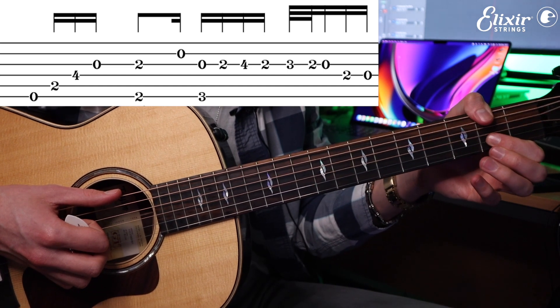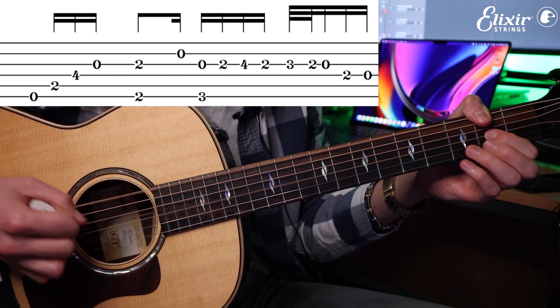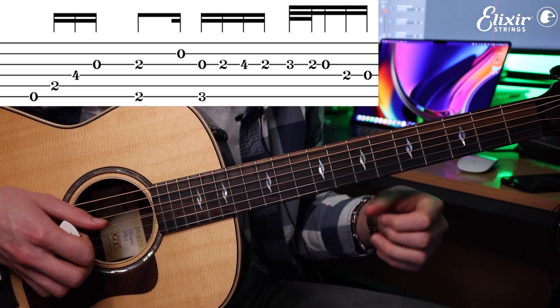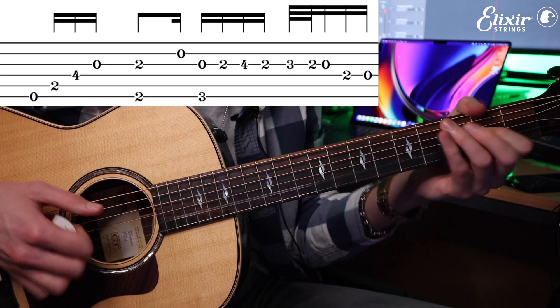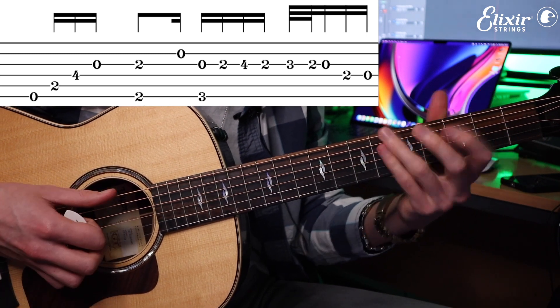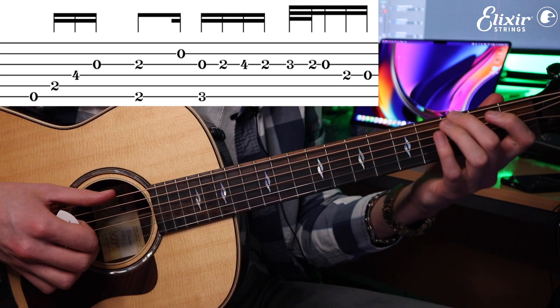And then here I'm using my thumb for the second fret of the low E and my first finger on the second fret of the G. Then an open B string after that, followed by second finger on the third fret of the low E for that G with an open G string as well.